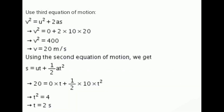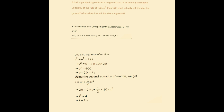Using the third equation of motion: v² = u² + 2as → v² = 0 + 2 × 10 × 20 = 400, so v = 20 m/s. Using the second equation of motion: s = ut + ½at² → 20 = 0 × t + ½ × 10 × t² → t² = 4, so t = 2 seconds.